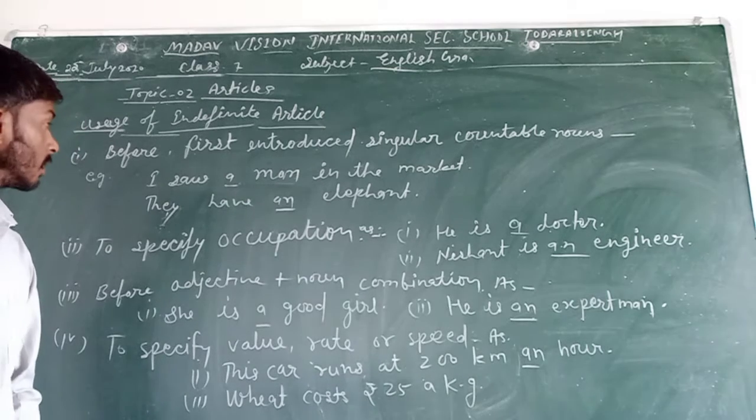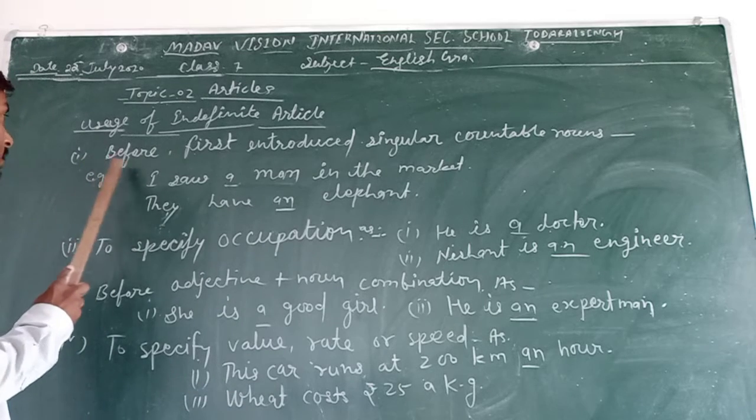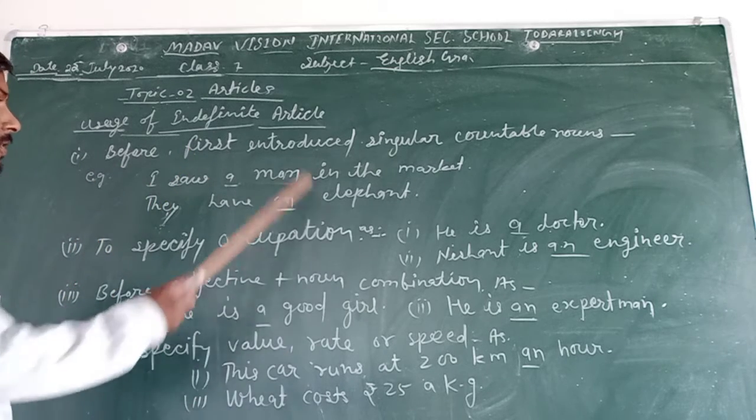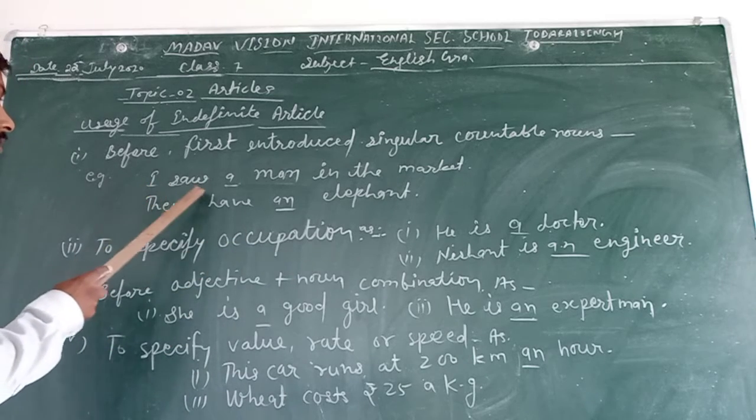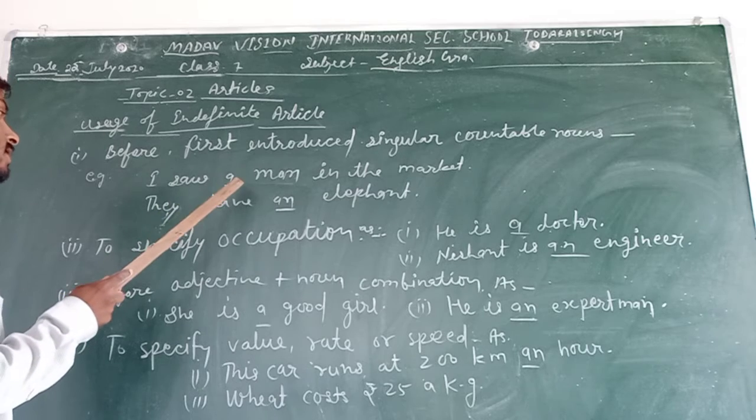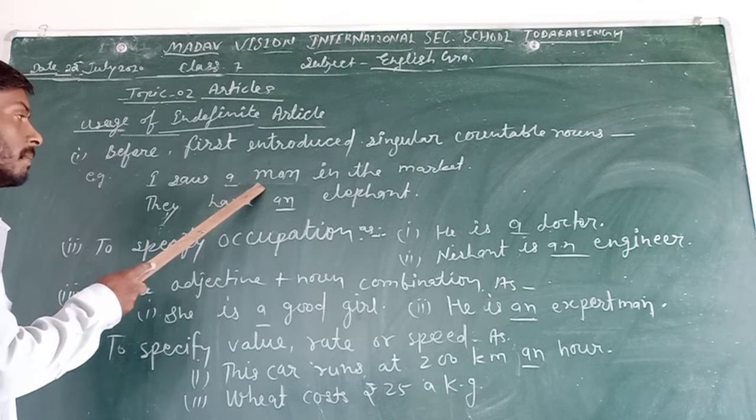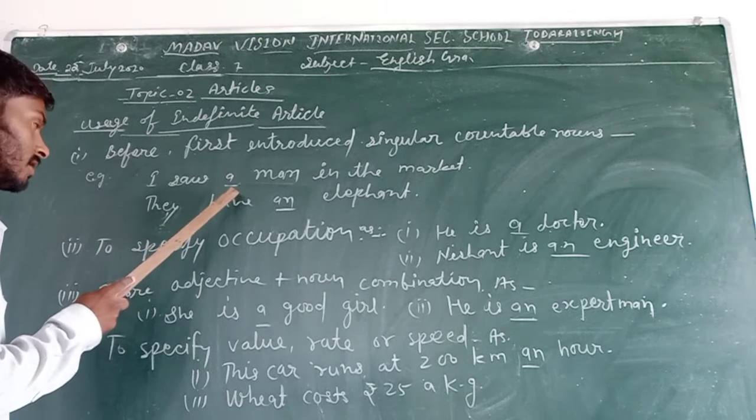Some rules are given here. First one, before first introduced singular countable nouns. Example, I saw a man in the market. In this sentence, first noun man, which first time introduced.